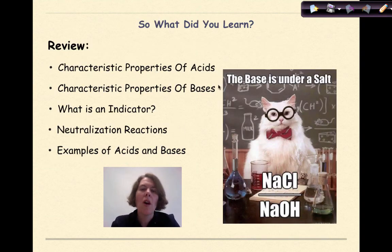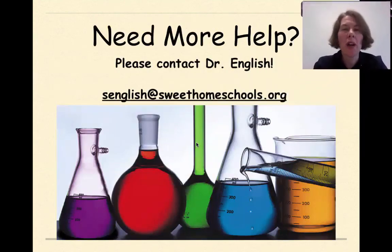So what did you learn in this tutorial? We went over the characteristic properties of acids. We talked about the characteristic properties of bases. We looked at what is an indicator, neutralization reactions, and also talked about some different examples of acids and bases. Need more help? Feel free to contact me. Have a great day.